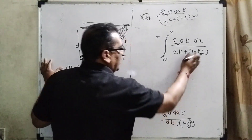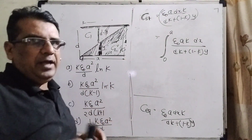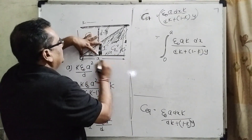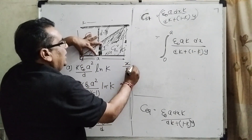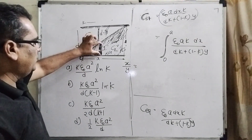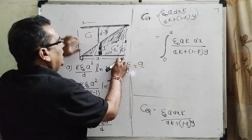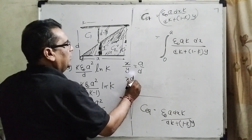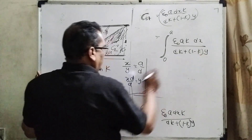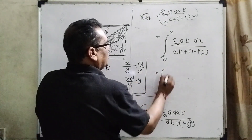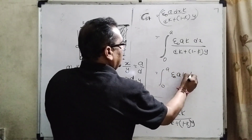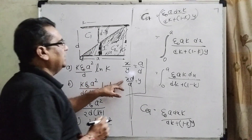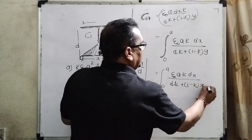One important thing: we already found the relation between y and x using similarity. y = xD/A. Now substitute this value of y into the integral from 0 to A: ε·A·K·dx / [DK + (1−K)·(xD/A)].